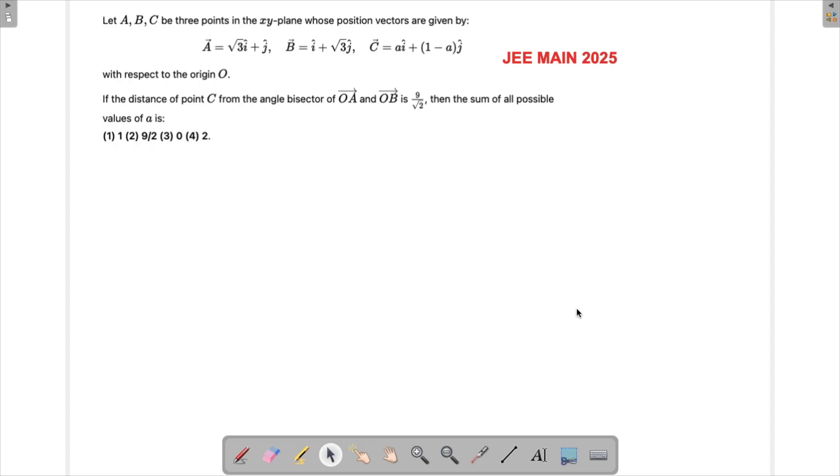Alright, so let's solve a problem which appeared in JEE Main 2025. This question is asking us to find out the sum of all possible values of alpha, where alpha is part of this vector. So there are three points in the xy-plane given by A, B, C.